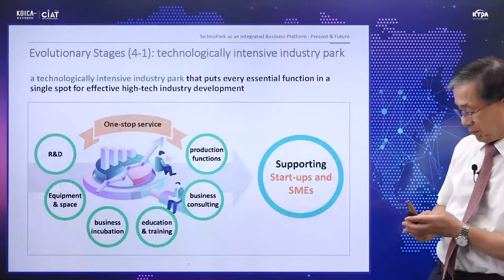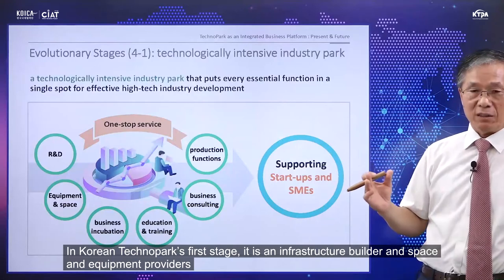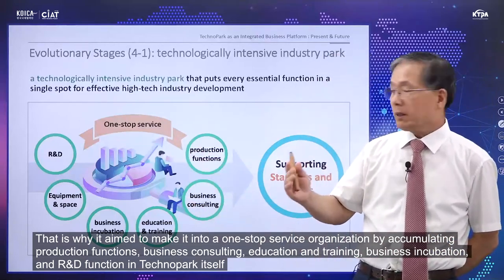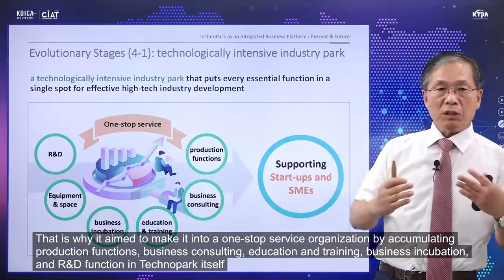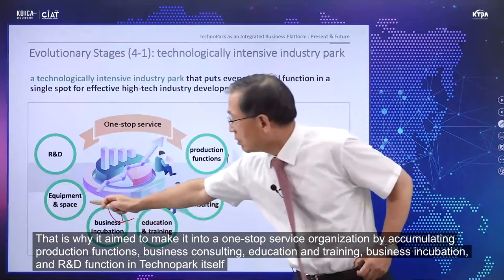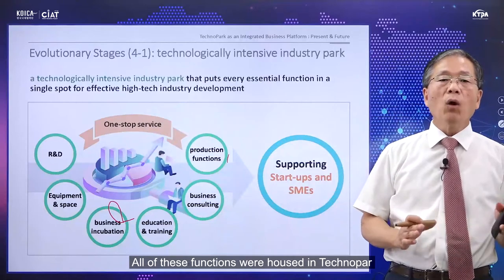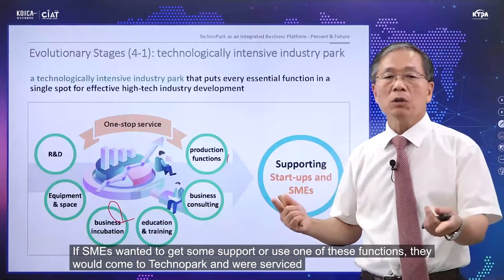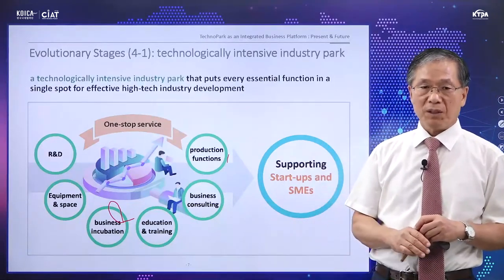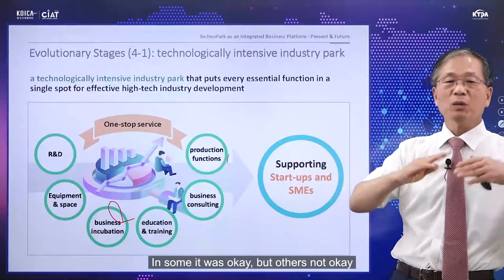In the first stage, Korean Technopark was an infra-builder — a space and equipment provider. It aimed to become a one-stop service organization by accumulating production functions, business consulting, education and training, business incubating, and R&D functions all within the technopark itself. If small and medium enterprises wanted any kind of support, they came to technopark and got serviced. We aimed for this, but it was not fully fulfilled in every technopark — in some it was successful, in others it was not.